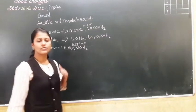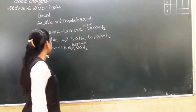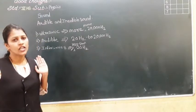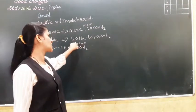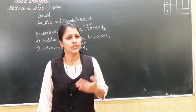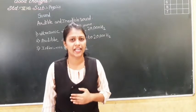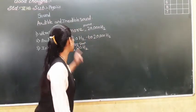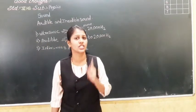The sound which is more than 20,000 hertz is called ultrasonic, while the sound which is less than 20 hertz is called infrasonic. The human being can hear sound between 20 hertz to 20,000 hertz. There are some certain animals such as dog, leopard, and bat — they can hear ultrasonic sound, more than 20,000 hertz.